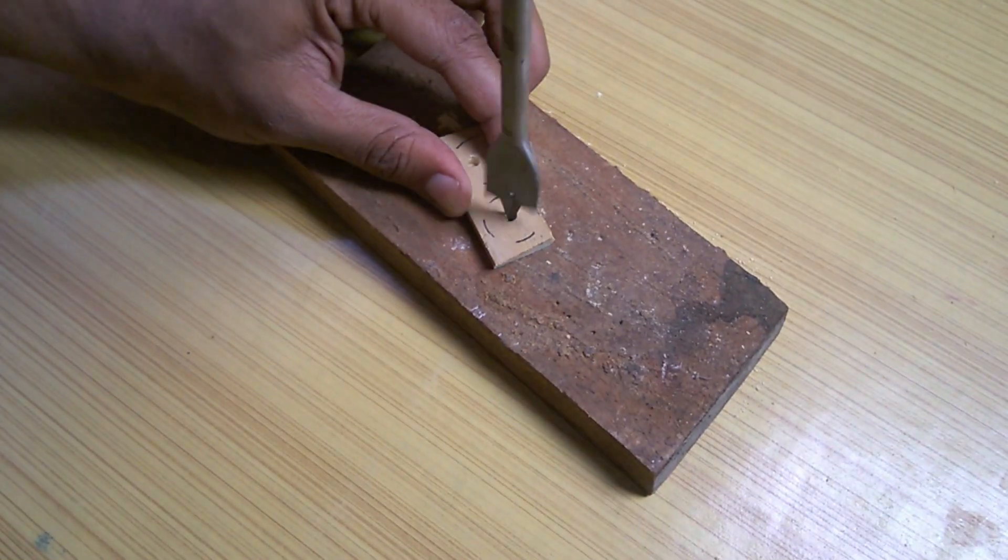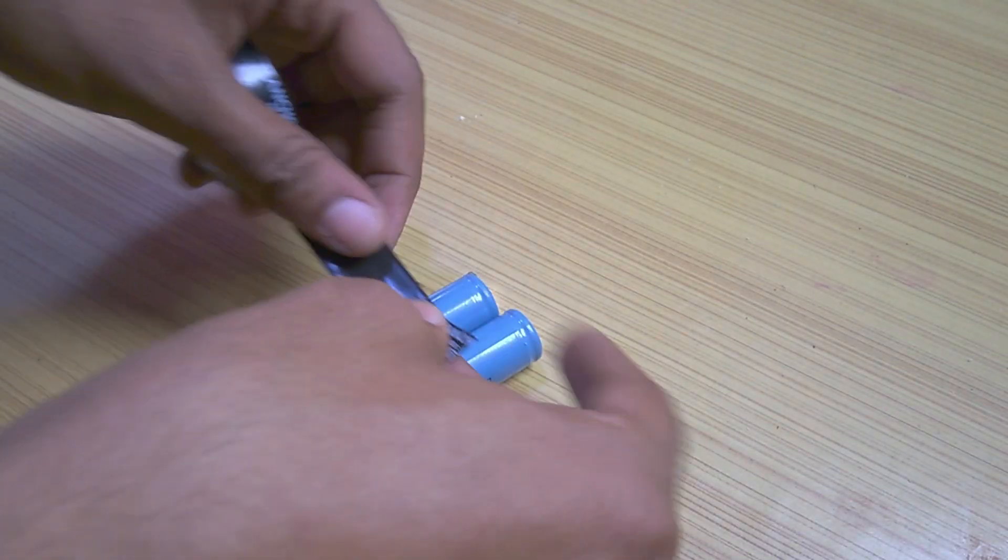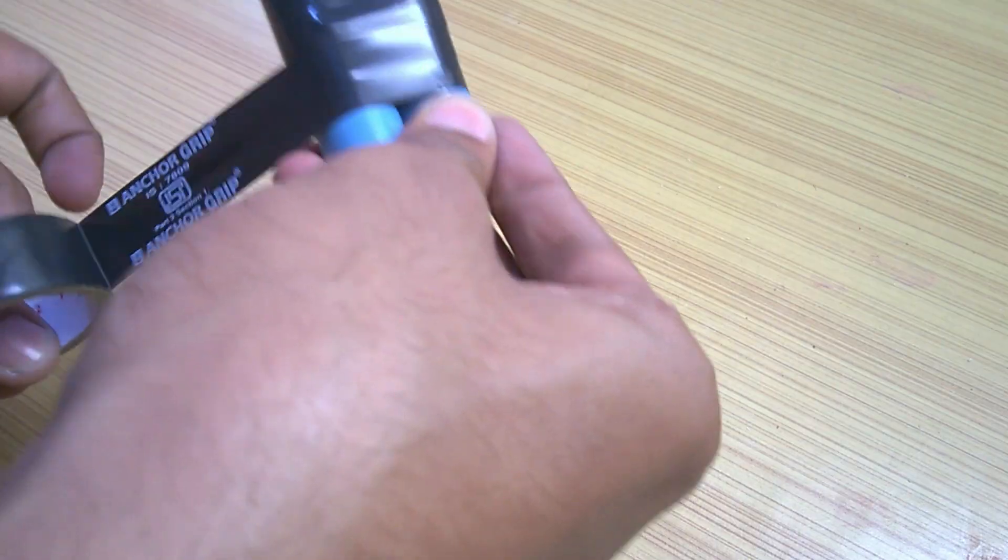Then using an 18mm drill bit, I tried to enlarge the holes and made these instead. Instead of waiting for a battery holder to arrive, I used electrical tape to hold the batteries.